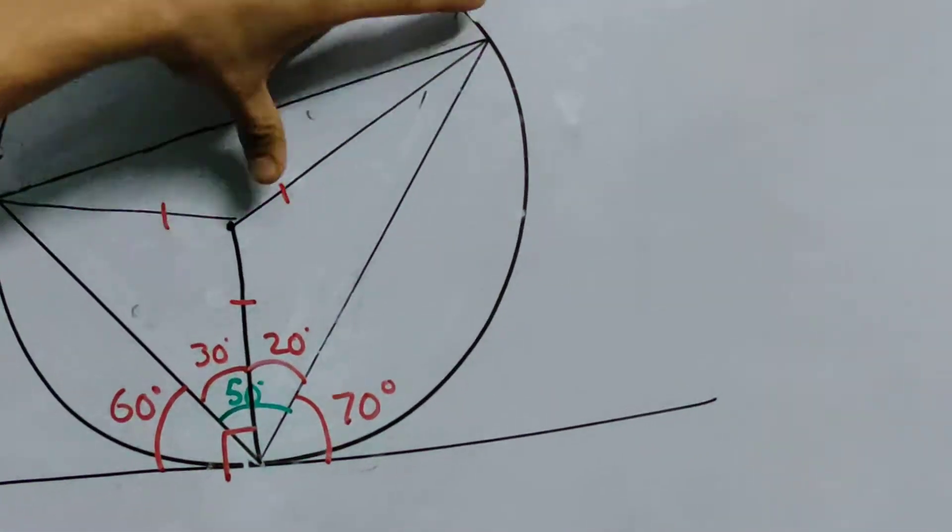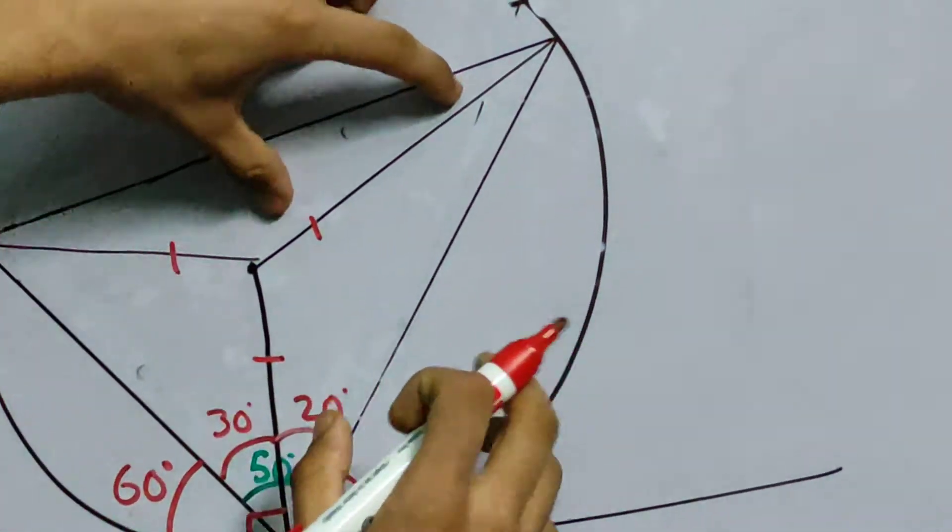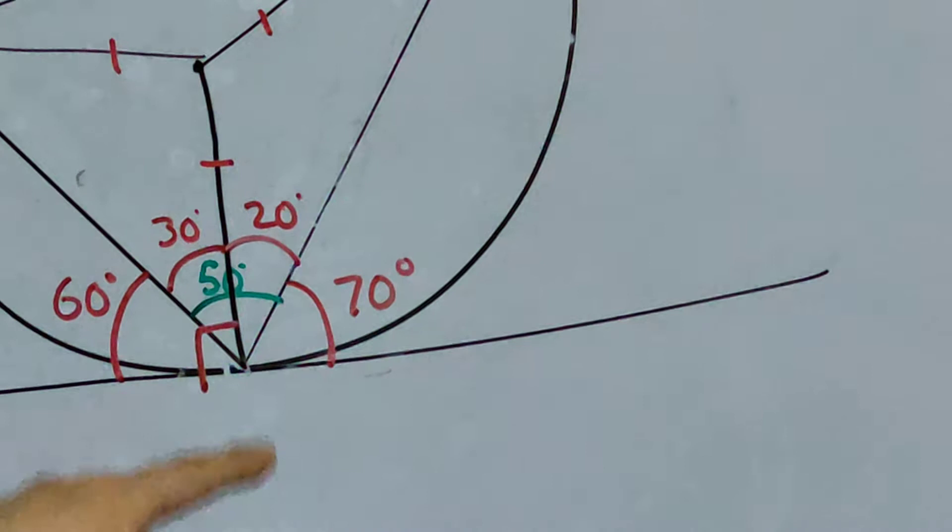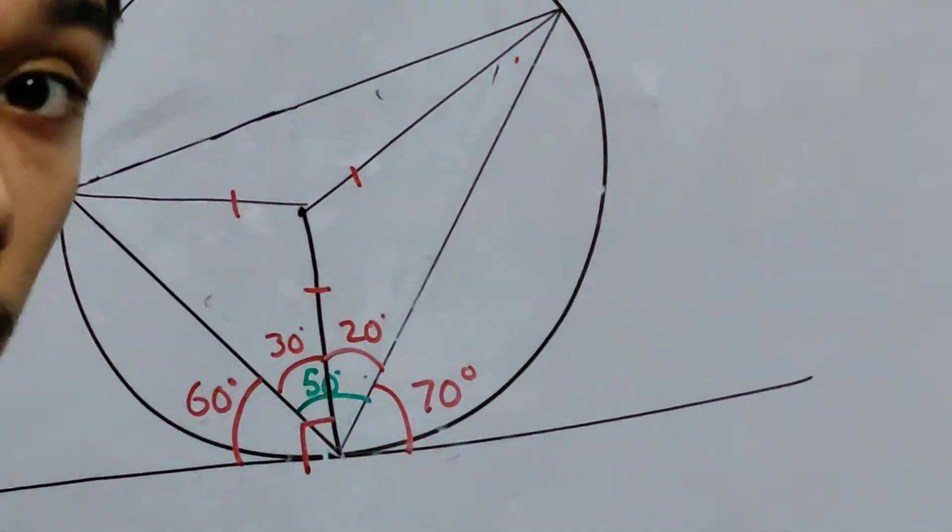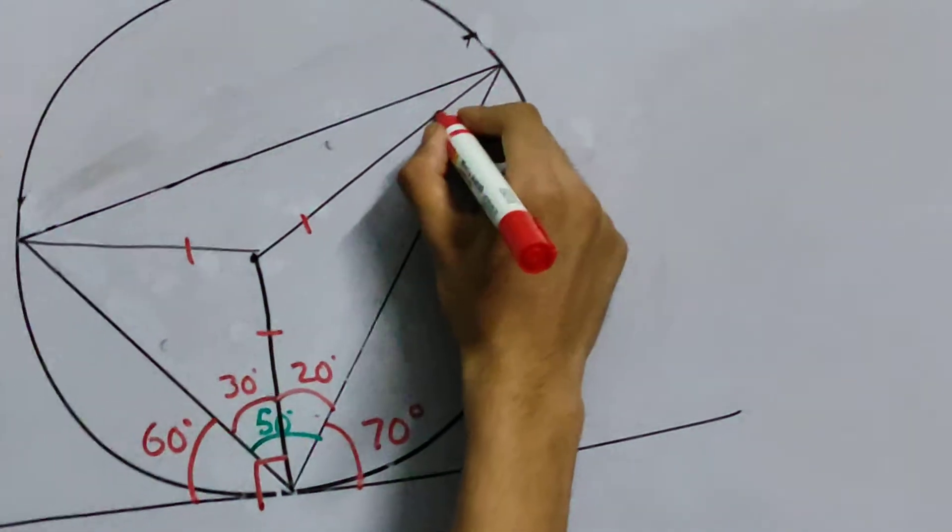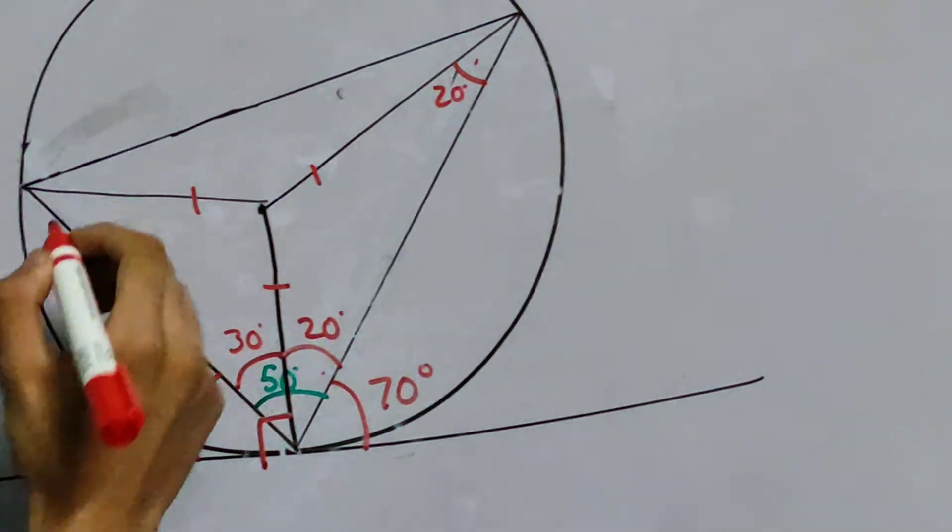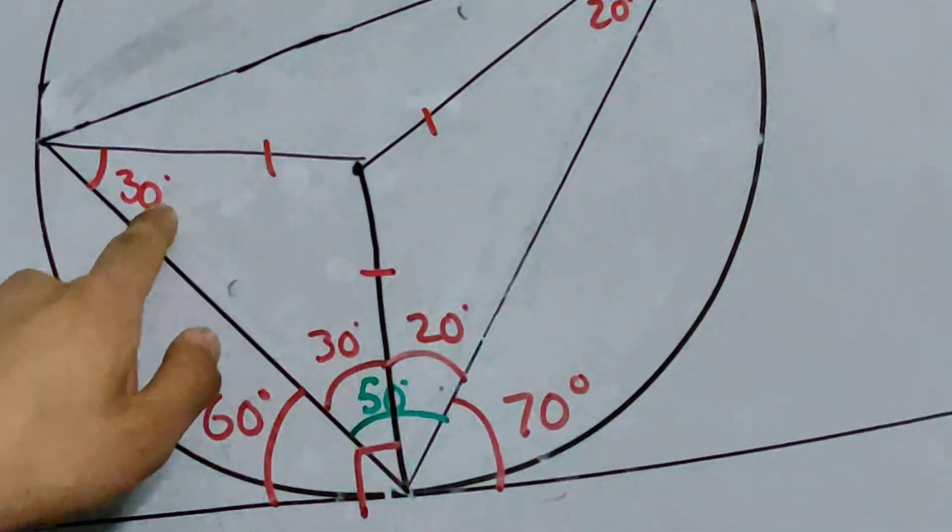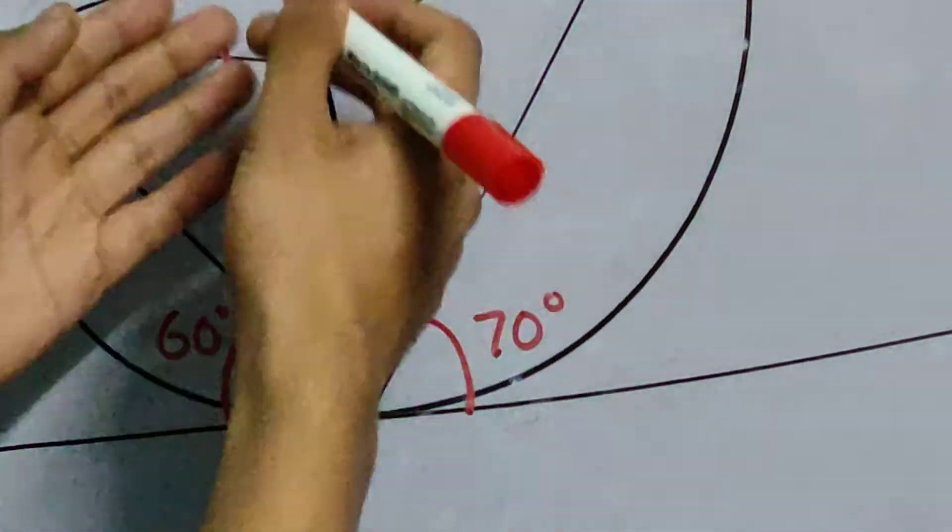Now look. If these two sides, like this triangle, if these two sides, this one and this one, they're equal. This one will also be 20 degrees. Similarly, this one will be 30 degrees. Now we can find the entire triangle. But here's the thing.